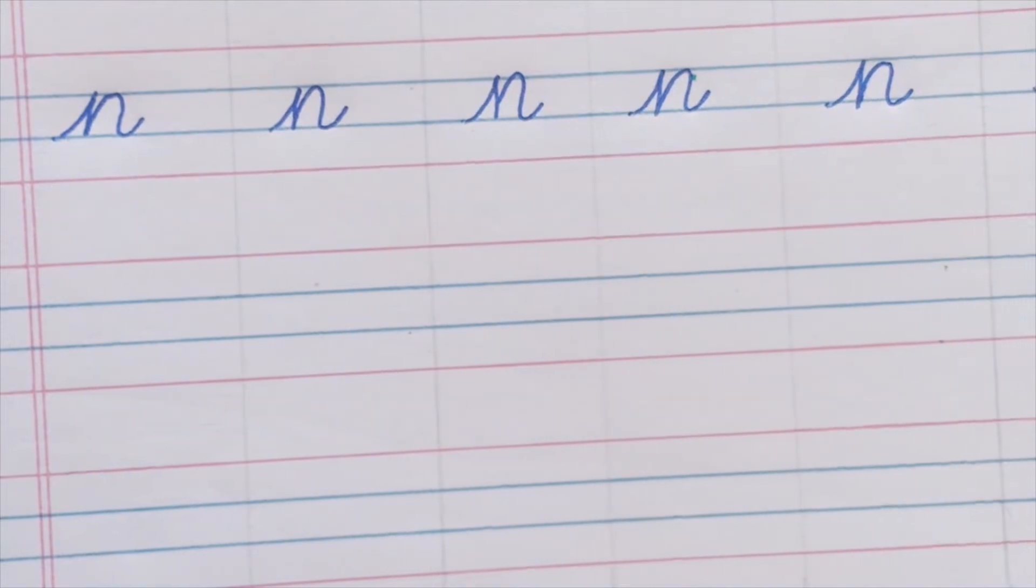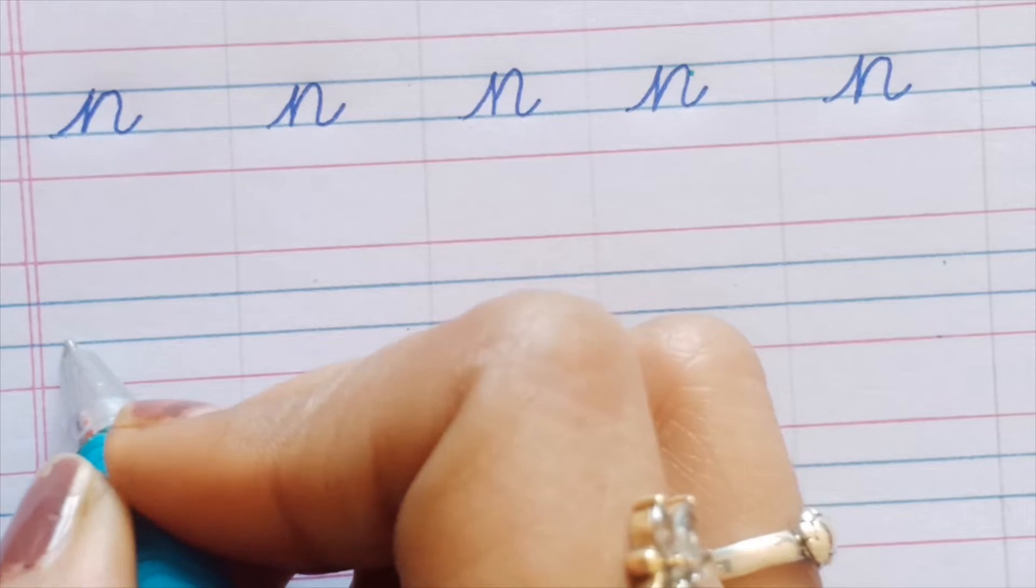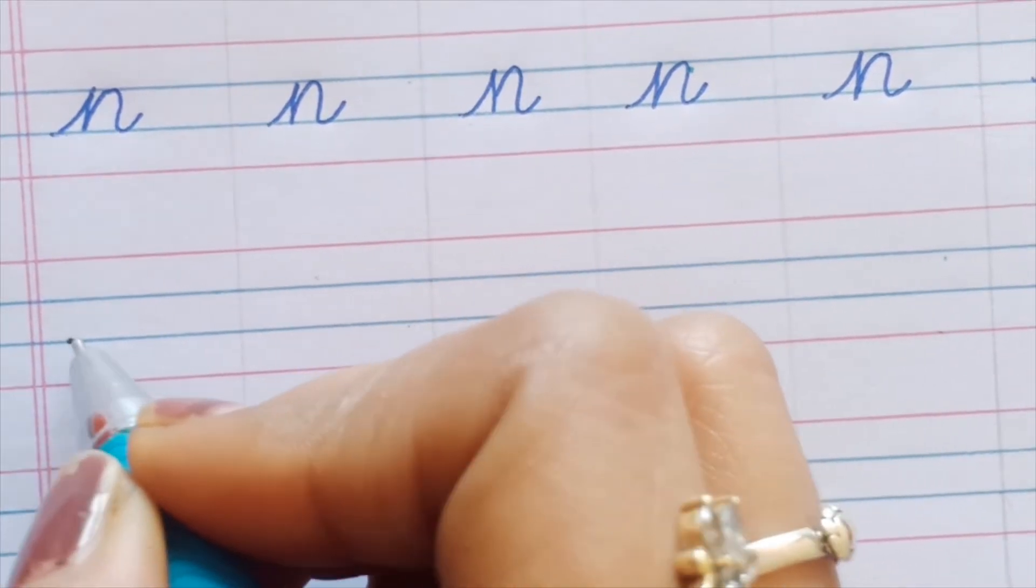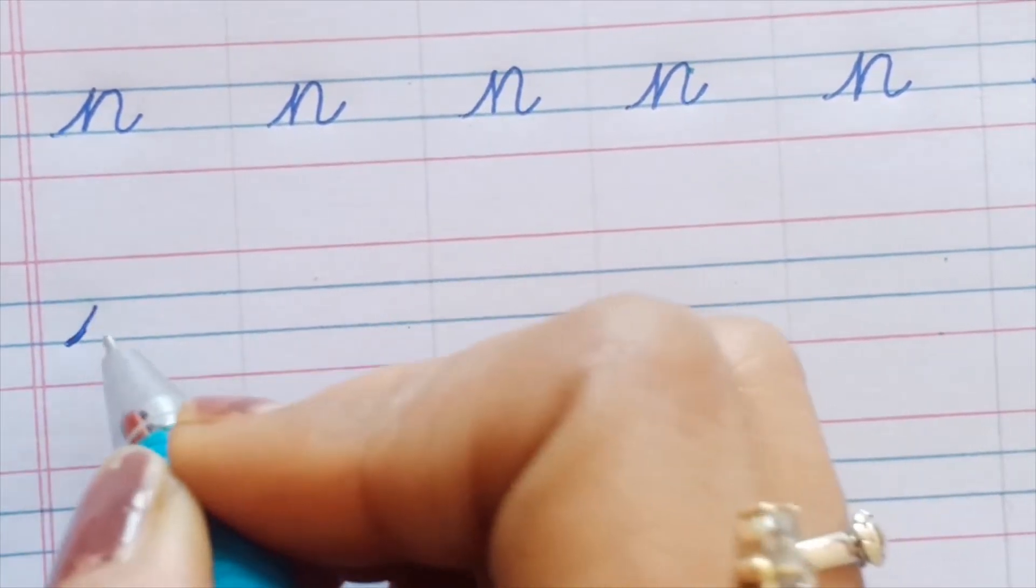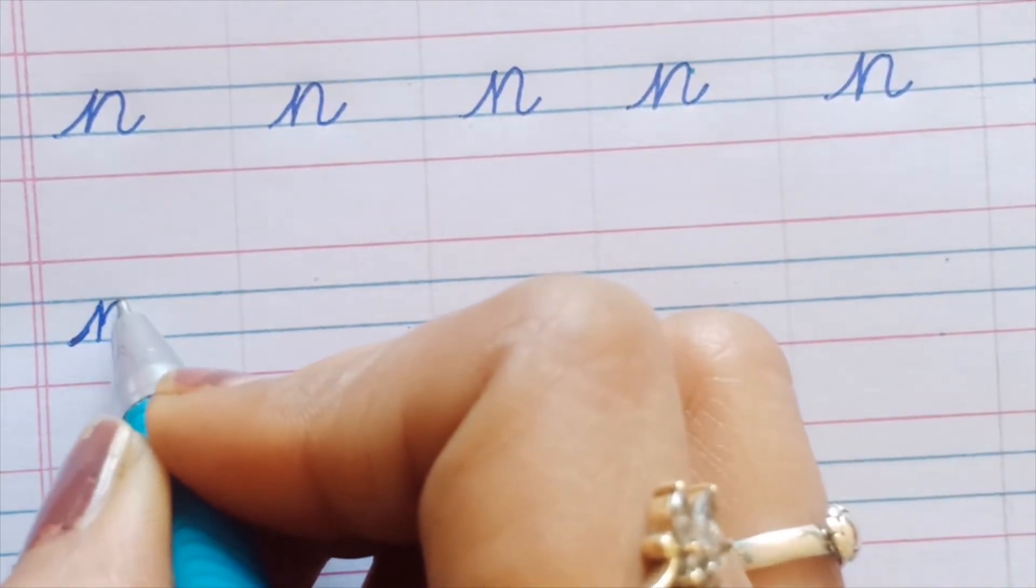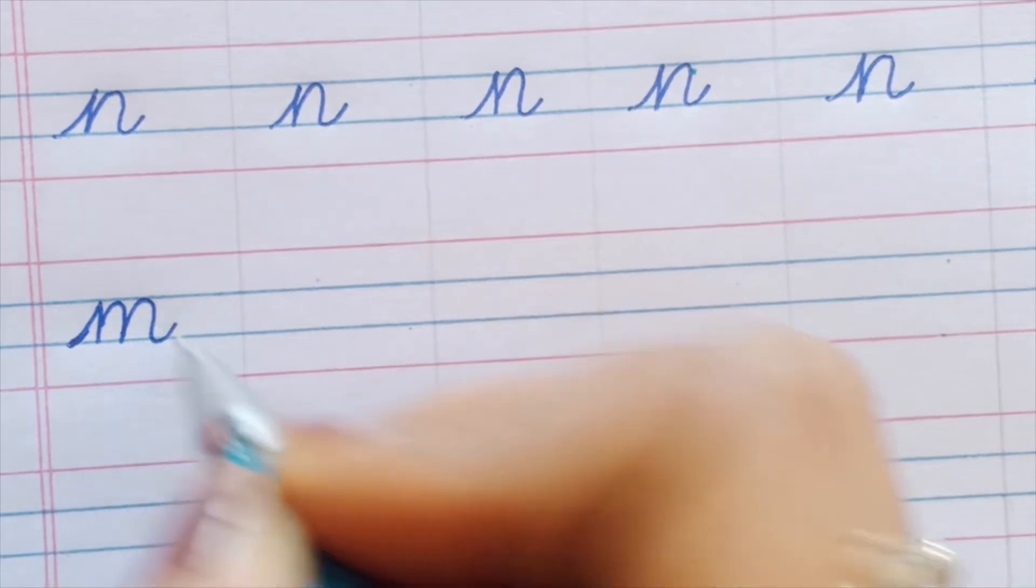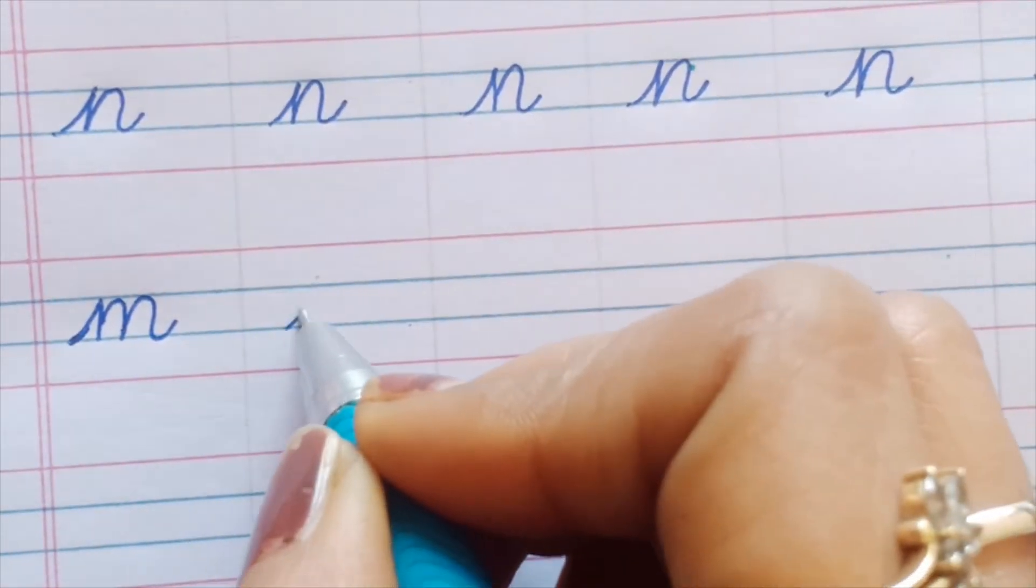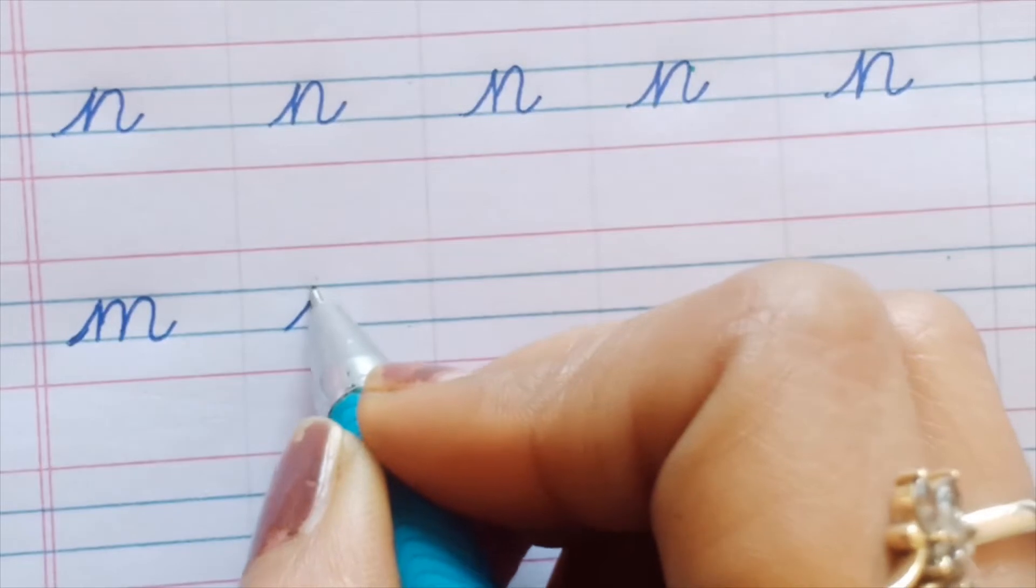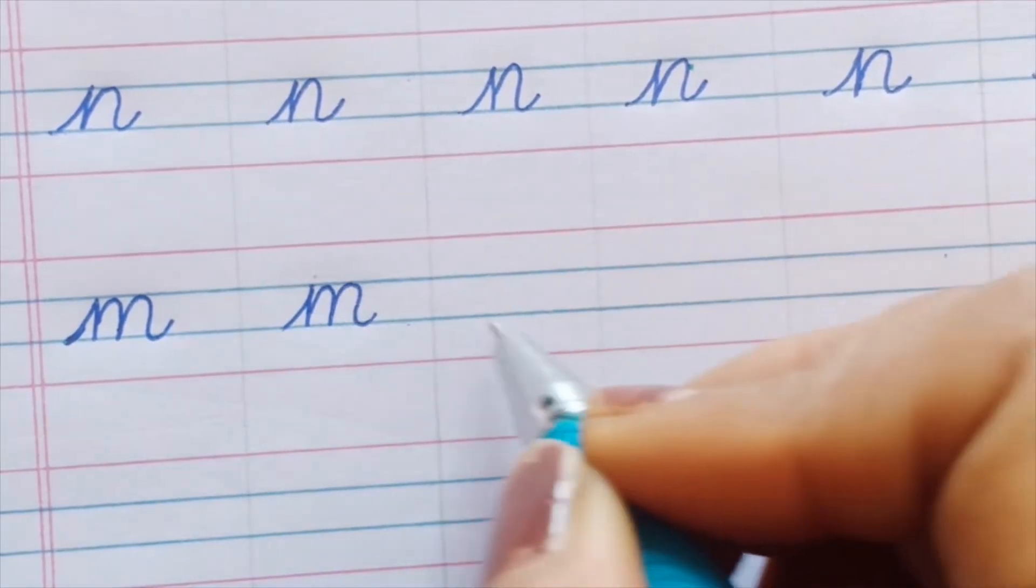Next is small 'm'. Again, we'll be doing the same thing. We'll start from the third line, bring it up, straight line down, then one bump, another bump, and then the tail. First line, second straight line, first bump, second bump, and tail.